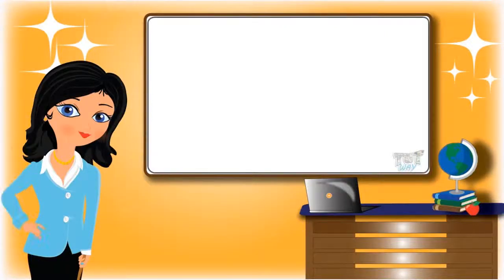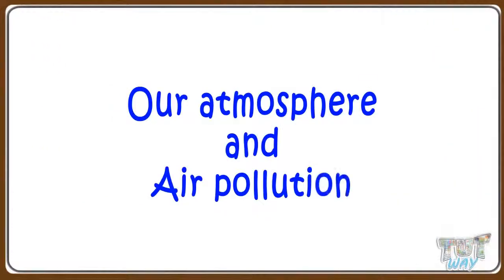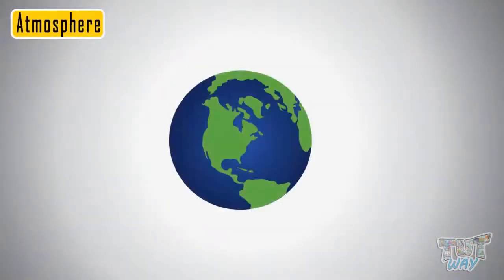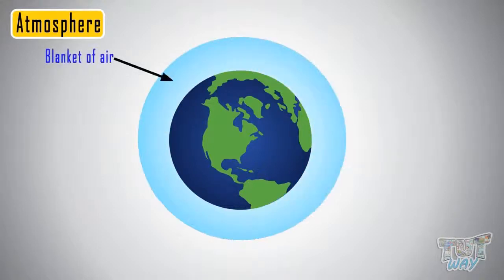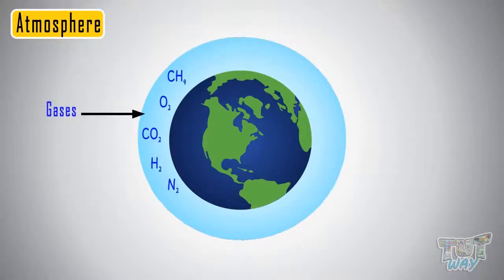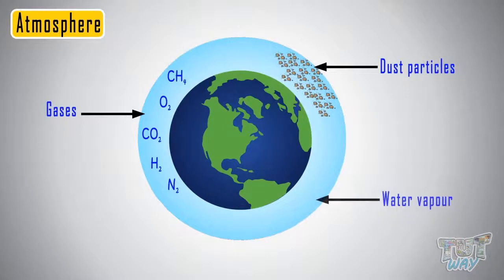Hi kids! Today we will learn how important is our atmosphere and what's polluting it. So let's start! Our Earth is surrounded by a blanket of air called atmosphere. It is composed of a mixture of gases, dust particles and water vapors.